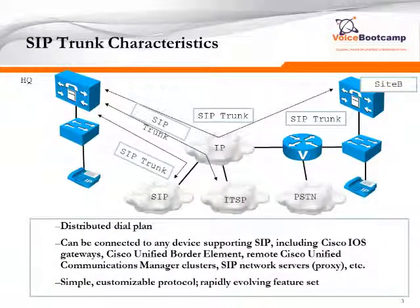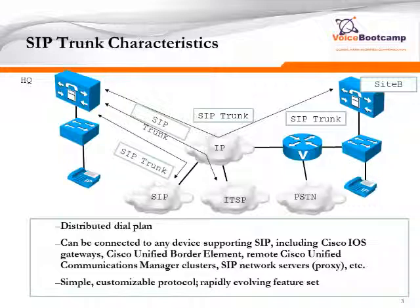SIP trunk is basically the type of interconnectivity that allows two endpoints to communicate over SIP protocols. You can use SIP trunk to communicate across clusters, call manager, multiple clusters. You can use SIP trunk to communicate between call manager and a service provider, or to talk to a PSTN gateway using Cisco routers, for example.